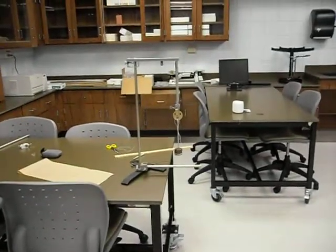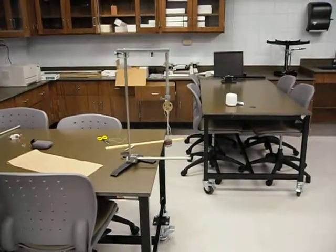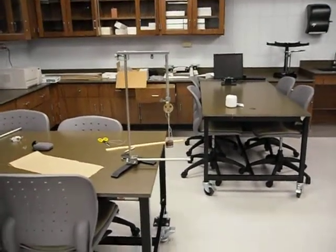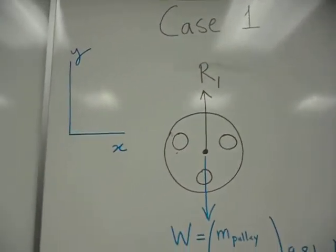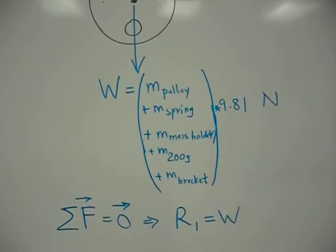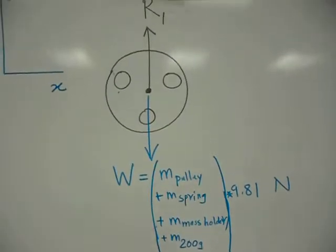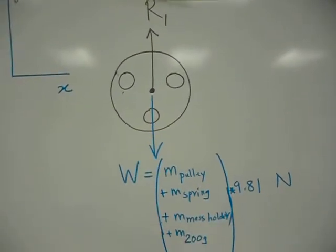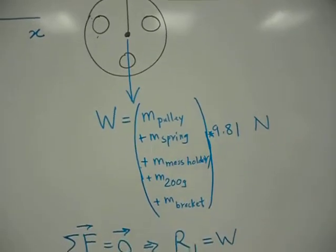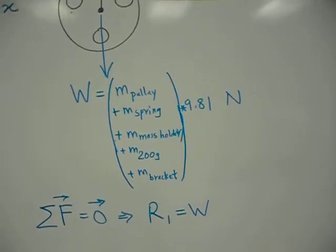But first let's look at a static equilibrium model or to be more precise free body diagram for the pulley in this configuration. And this is what it looks like. So you would agree that the restoring force of the spring equals the weight, where weight is the mass times gravitational acceleration, the mass being categorized like such.